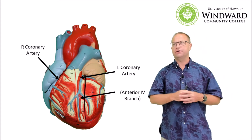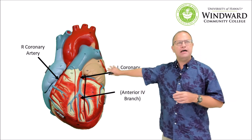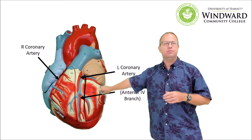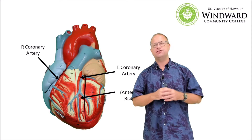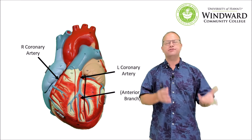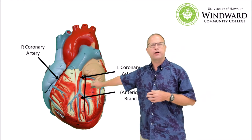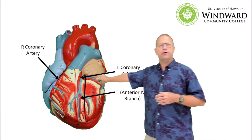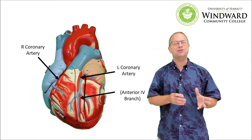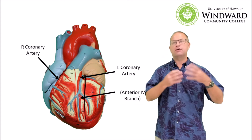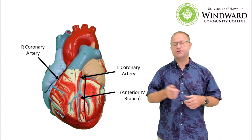Now let's talk about the coronary arteries. These are the arteries on the outside of the heart that supply the heart muscle with oxygen-rich blood. You might think the heart's large vessels already do this, but they don't supply the myocardium with oxygen for its own metabolic needs — that's the job of the coronary arteries. We have a left coronary and a right coronary. They're very small arteries, easily occluded, which is why coronary artery disease and myocardial infarction occur.